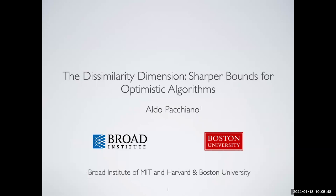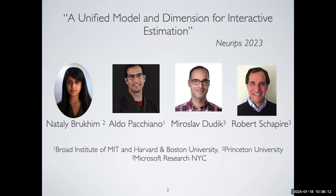Thanks a lot for the introduction. I'm really happy to be here. Welcome everyone. Today I'll talk about something called the dissimilarity dimension — a statistical concept we introduced in very recent work — and how it can give us sharper bounds for optimistic algorithms. This is joint work with fantastic co-authors Natalie, Miro, and Rob from my time at Microsoft, and appeared at NeurIPS this year.